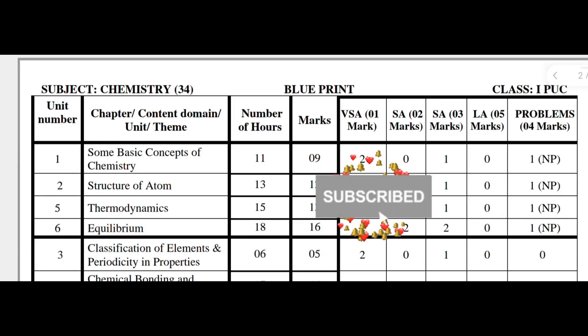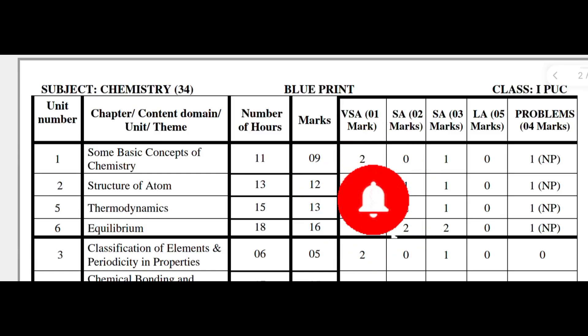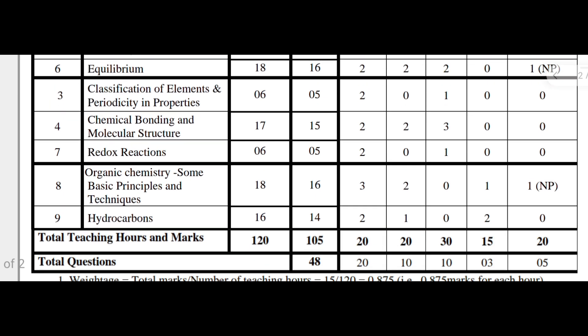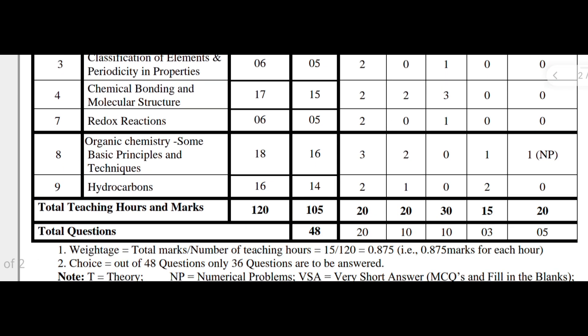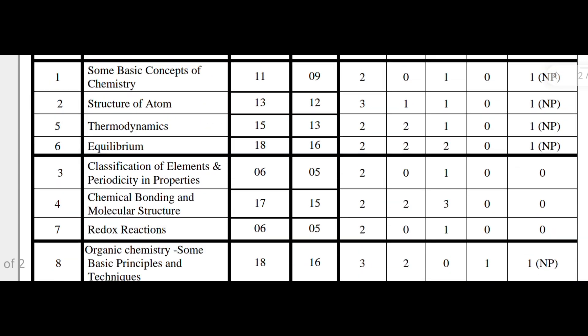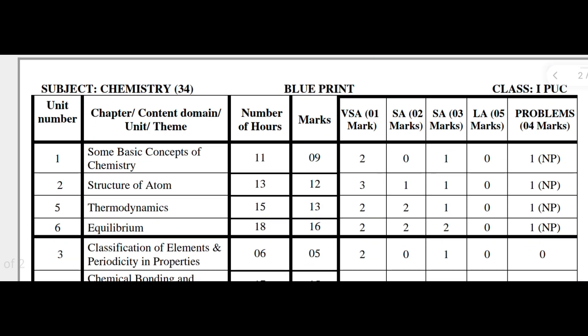Hi everyone, today I am going to discuss the First PUC Chemistry blueprint for academic year 2024-25. This subject has a total of nine chapters, with 120 total teaching hours allotted, and the exam carries 105 marks including options.